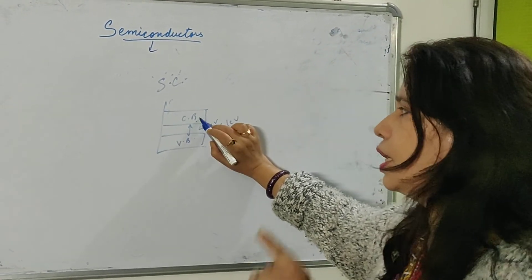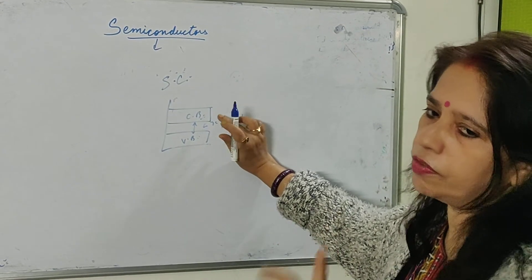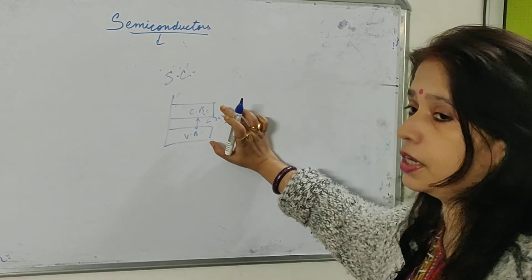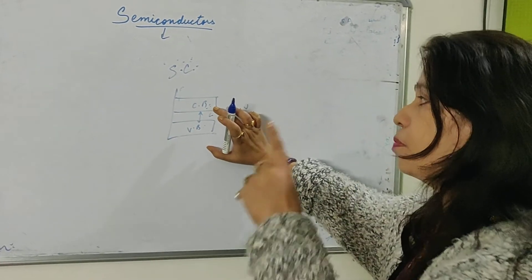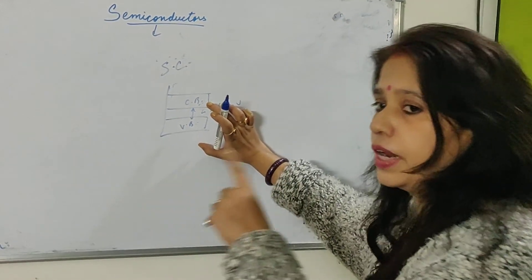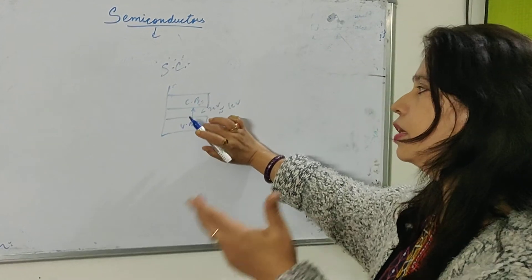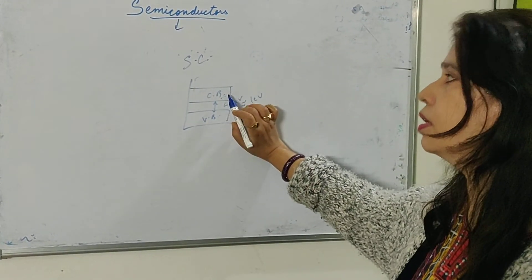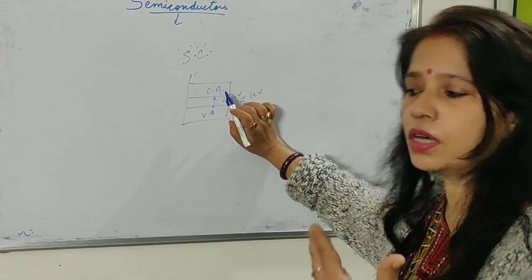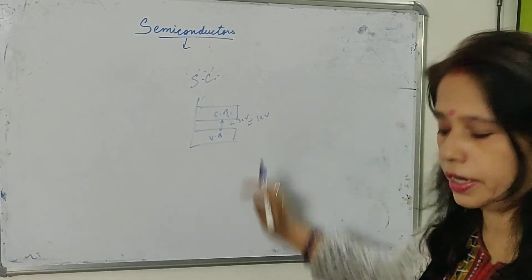That means, it participates in the conduction of electricity. So, it must be clear now that the child asked that whether it behaves like an insulator and conductor. We can see that it is clear that at 0 Kelvin, it behaves like an insulator, but at room temperature or on supply more thermal energy, it behaves like a conductor.